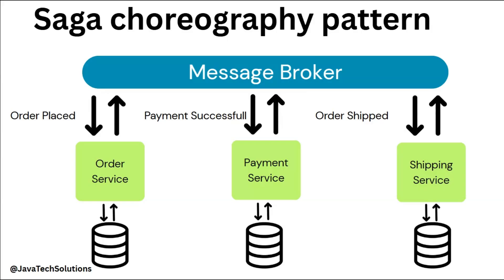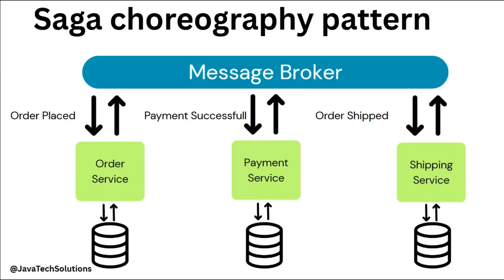So how do these things happen? There is a message broker, or we can call it an event. Whenever an order is placed it comes to the order service. This is one microservice, this is the payment microservice, and this is the shipping microservice. The order microservice, whenever an order is placed, will save the data and give the response back to the user. Internally, once the order is placed, it will push data into this message broker. The message broker can be Kafka, RabbitMQ, JMSQ, or any message broker you can use.